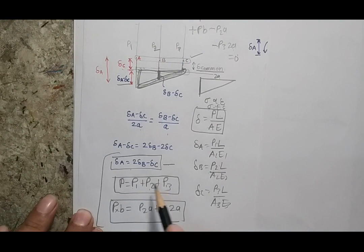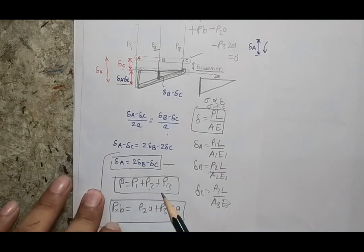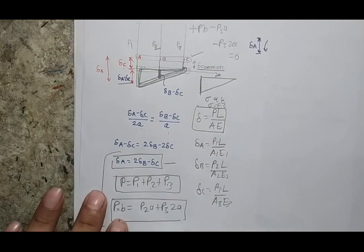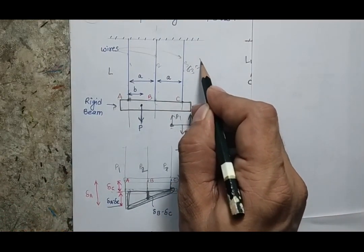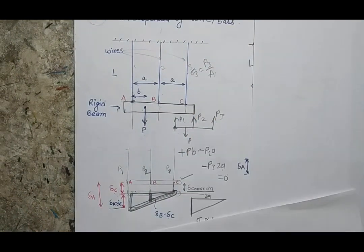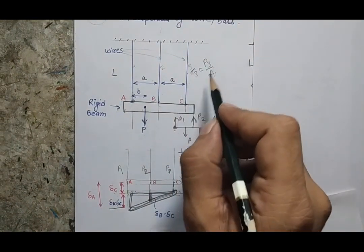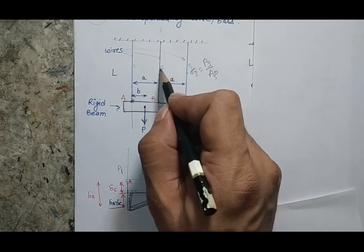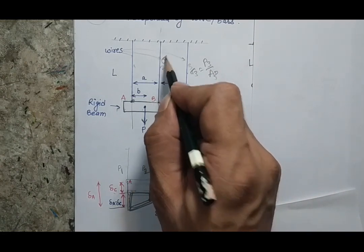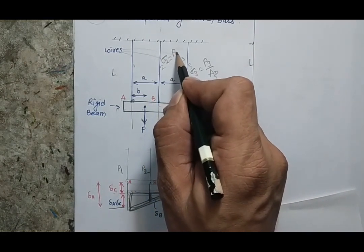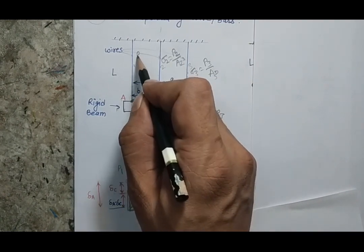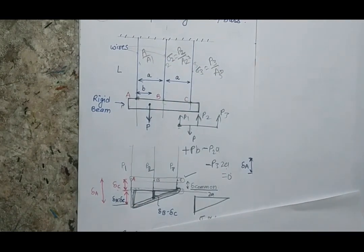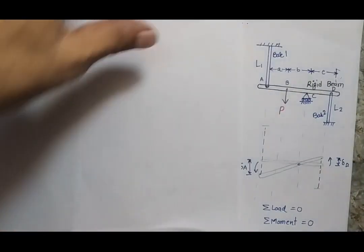Once the individual forces are known, I can find the stress in each wire. Stress in wire 3 is sigma_3 = P3 / A3, stress in wire 2 is sigma_2 = P2 / A2, and stress in wire 1 is sigma_1 = P1 / A1.